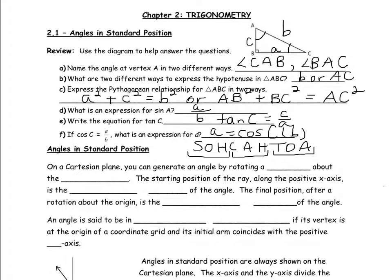This is the start of our chapter 2 notes for trigonometry. The first thing I want to do is review a little bit of right angle trigonometry from last year. If we look at the top right corner, we've got right triangle ABC with vertices capital A, capital B, and capital C, and sides opposite those vertices of the lowercase letters. Opposite vertex A would be side little a, opposite vertex B is side little b, and opposite vertex C is side little c.